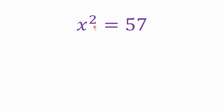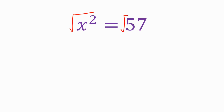Let's say that we get one that we can't do in our head, like x squared equals 57. I have no idea what number times itself gives me 57. What I'm going to need to do is undo this squared on both sides of the equation. The opposite of squaring something is taking the square root. I don't know what the square root of 57 is — you're going to need a calculator.